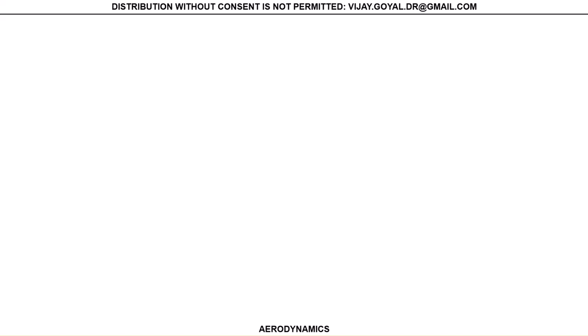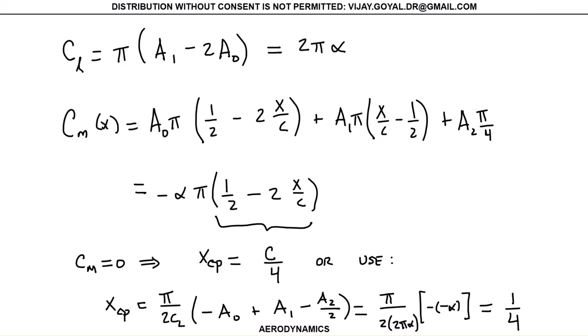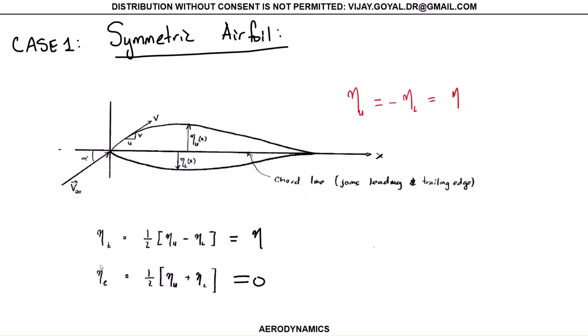Now let's see how we evaluate a_sub_zero. A_sub_zero is 1/π times the integral from 0 to π of ∂η/∂x of θ dθ minus α. This is zero because the airfoil is symmetric, so that equals minus α.